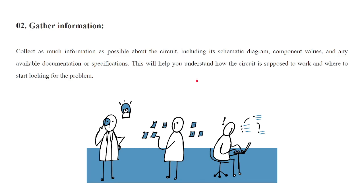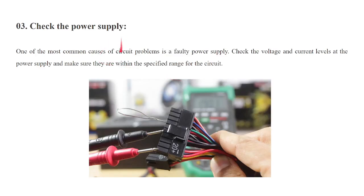You can then start searching for the problem. The third step is to check the power supply — whether it is within range or not. One of the most common causes for circuit problems is a faulty power supply. If there is a high voltage, your circuit will get damaged, so the power supply must be within range. Check the voltage and current levels at the power supply and make sure they are within the specified range for the circuit.